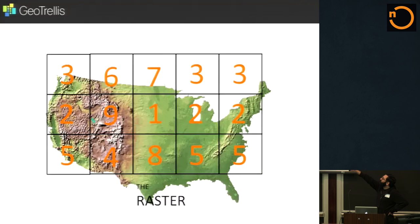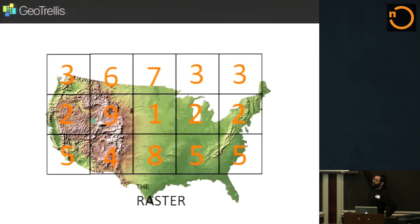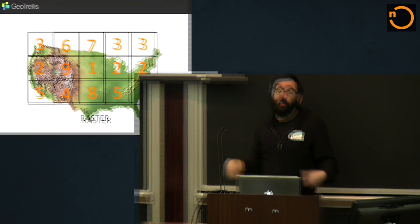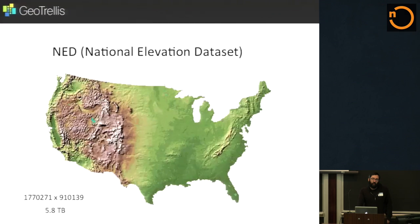With the raster, we have a regular grid, and we pin it onto the map. We define how many cells, how many columns, and where on a particular map. The world is round, but maps are flat, so we project it. We define where the westmost and eastmost sides of the grid are, and each cell now represents an actual place on the earth, and we can put information in it. What we're looking at here is the National Elevation Database, NED. The grid is about 2 million by 1 million cells, and it's about 6 terabytes.